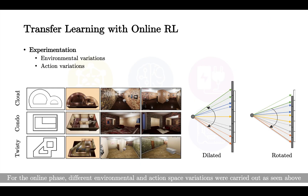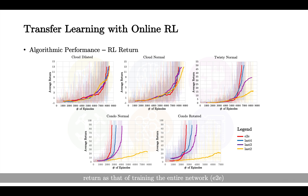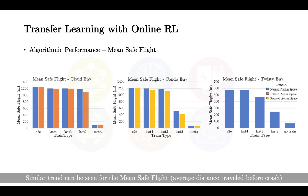For the online phase, different environmental and action space variations were carried out, as seen above. The graphs above show the reinforcement learning return for different frame types across different environmental and action space variations. It can be seen that in all the cases, training the last four layers seems to gain the same reinforcement learning return as that of training the entire network. A similar trend can be seen for the mean safe flight, which is the average distance travelled before crash.